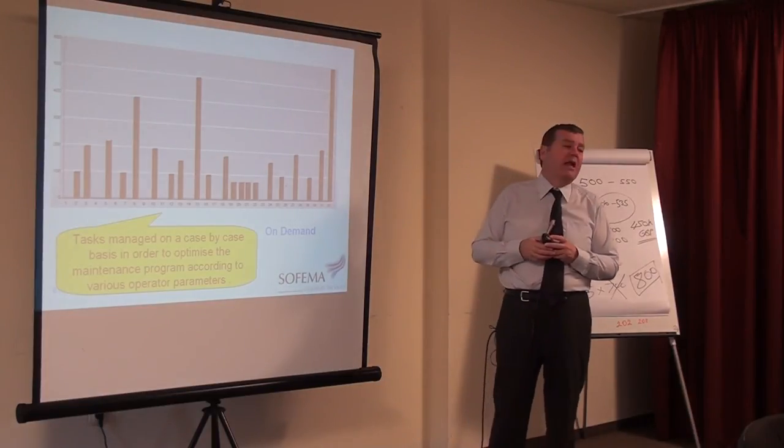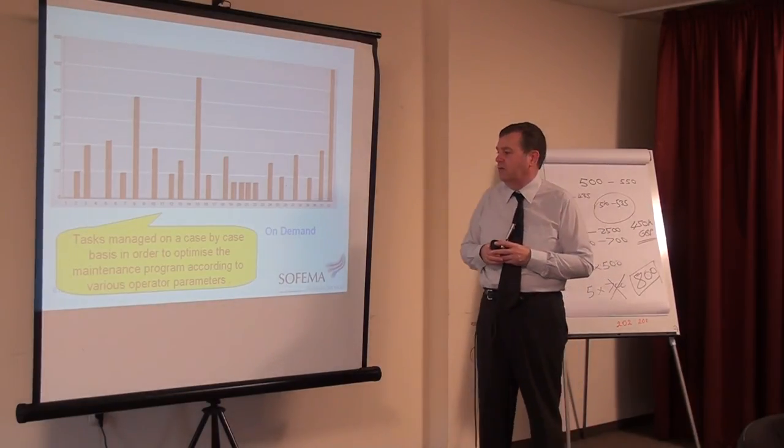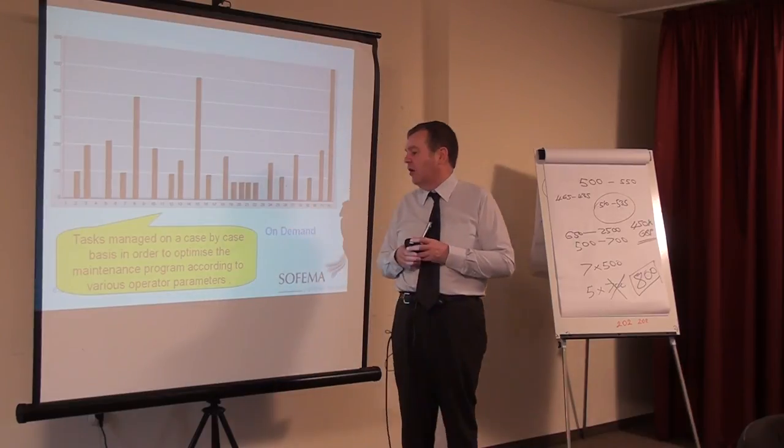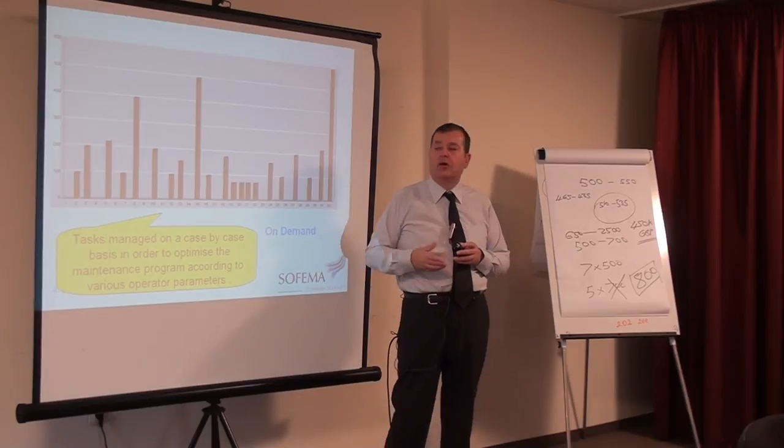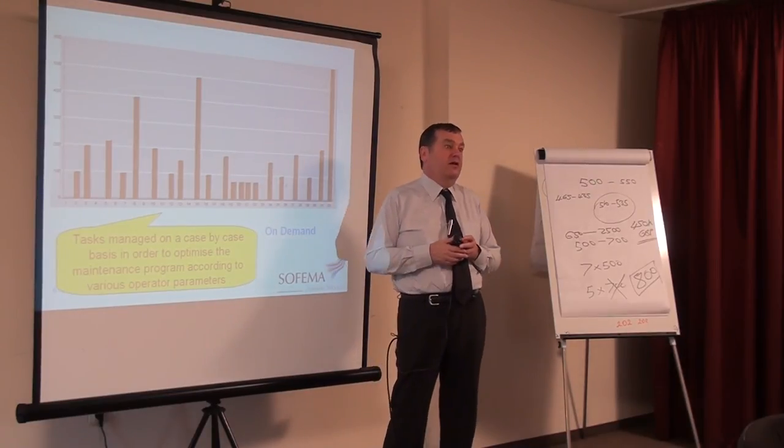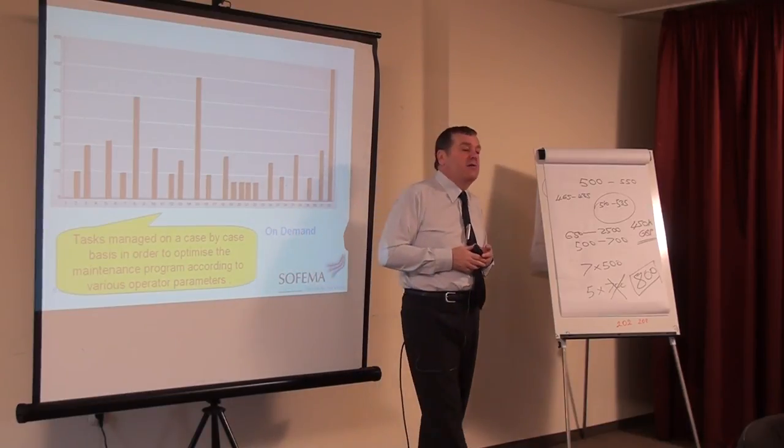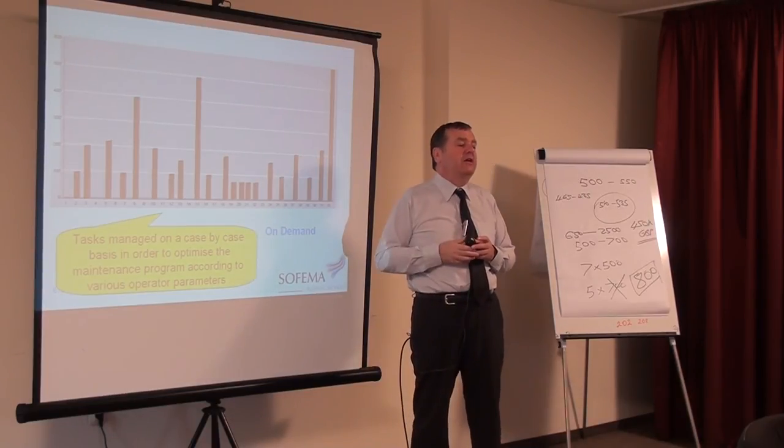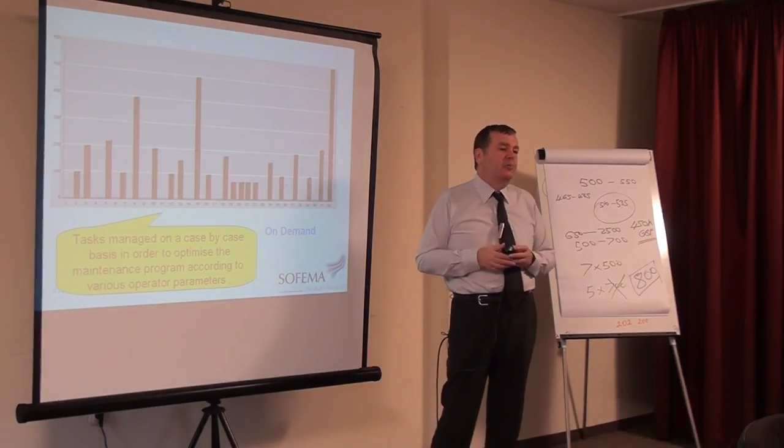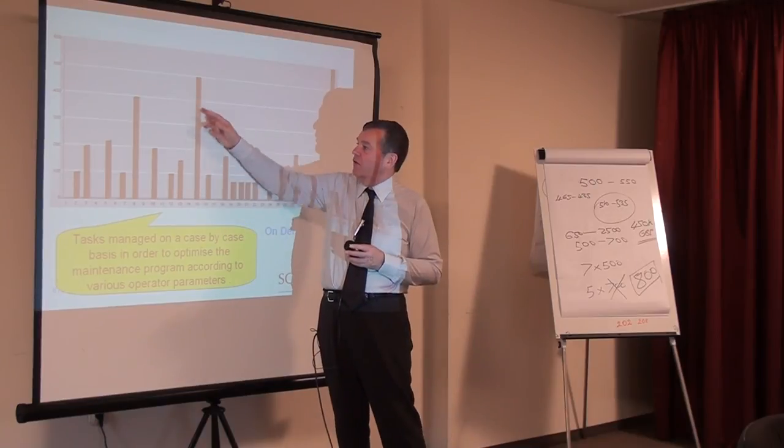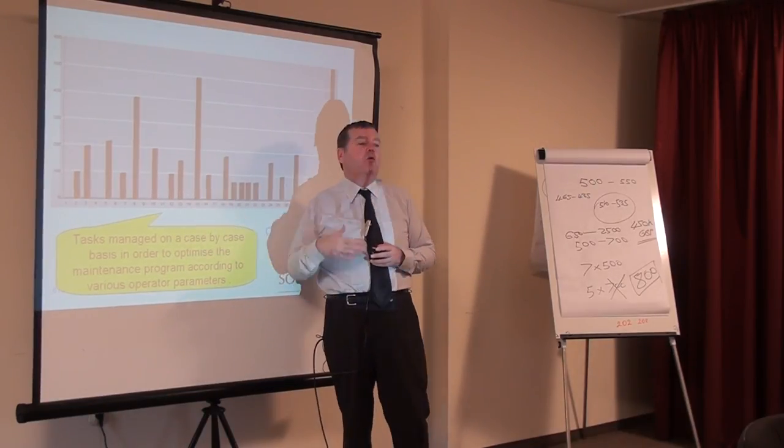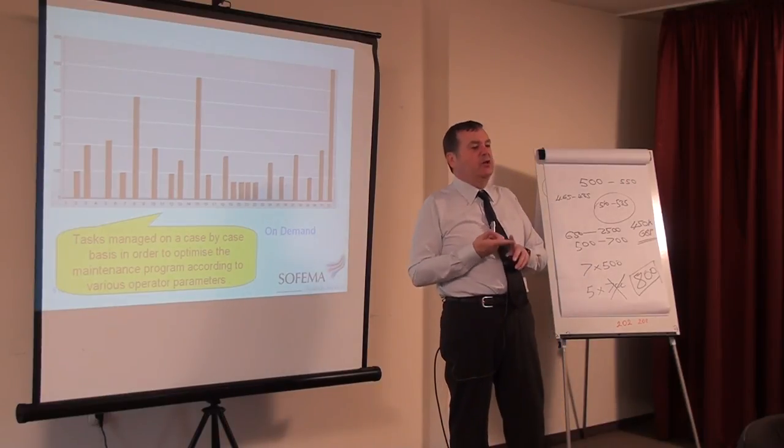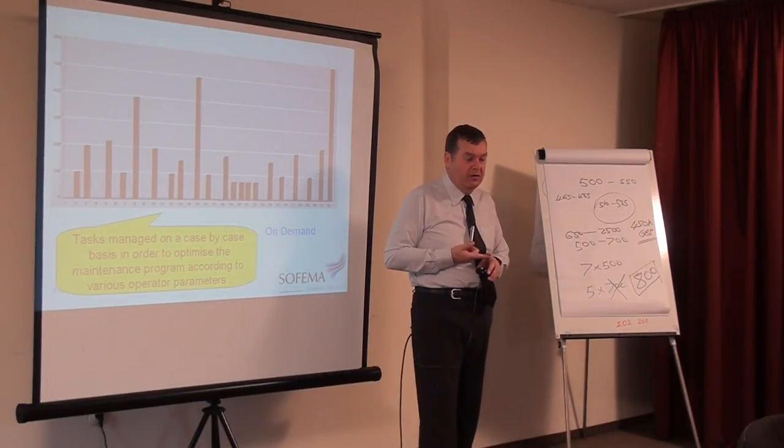Here we're looking at an on-demand system. It's all over the place. Tasks managed on a case-by-case basis in order to optimize the maintenance program according to various operator parameters. You tell me how many days I can have the airplane for, and I will manage the maintenance accordingly. Can you imagine that? This is the planner's nightmare to try and do it this way. But in terms of availability, it matches completely with the availability. However, from a practical point of view, doing this much maintenance in one period and then saying that the airplane will be available tomorrow, it won't be. It'll be in bits. Not only will it be in bits, there'll be a shortage of something we can't get hold of, and so on.